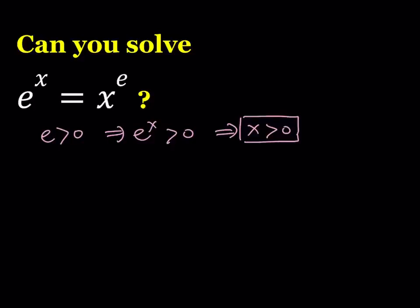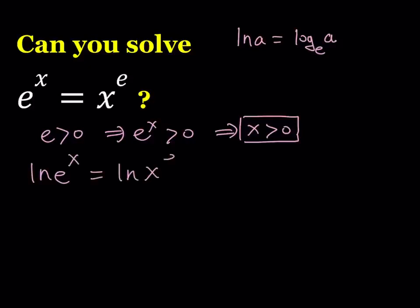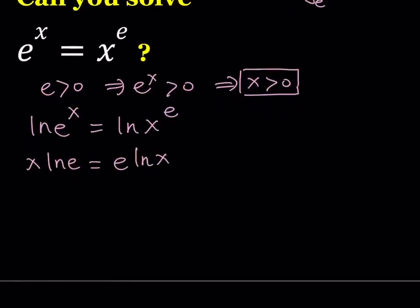Let's go ahead and take the natural log of both sides. Whenever you have e as a base, it makes sense to ln both sides. By definition, ln of a number a is the logarithm of a with base e. So ln of e to the power x equals ln of x to the power e — this is a really good way to get rid of the exponents. Moving the powers down: x·ln(e) equals e·ln(x). Since ln(e) equals 1, we get the equation x equals e times ln(x). We no longer have any powers.